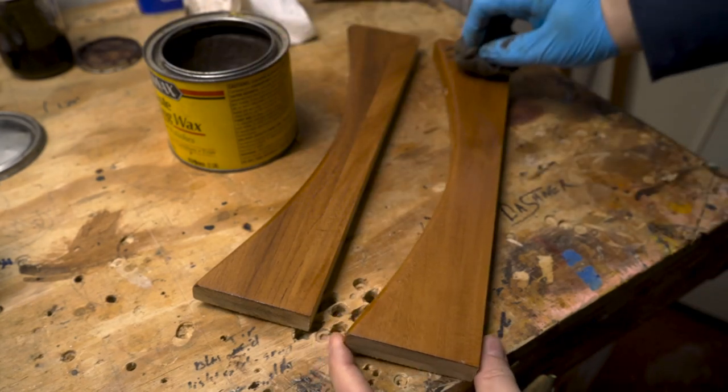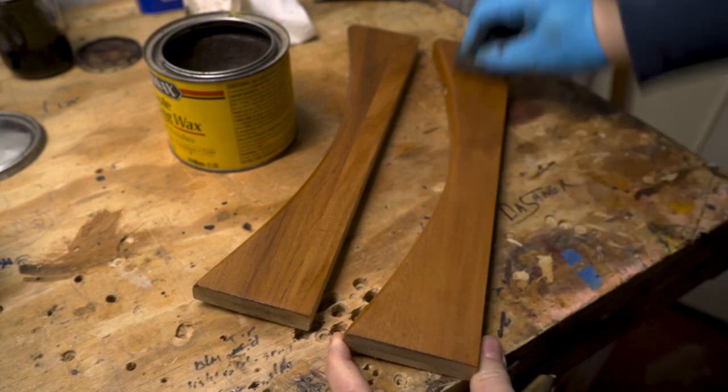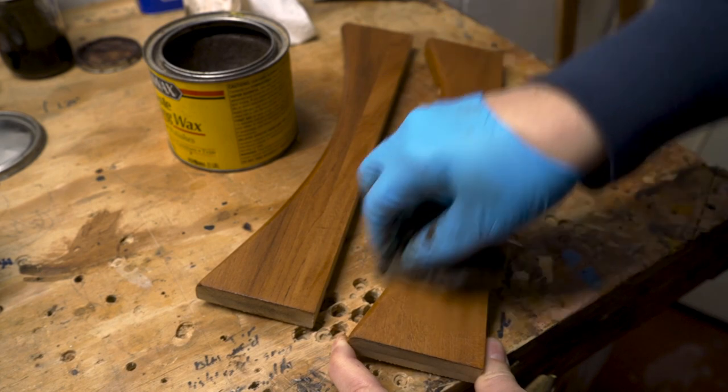Once the polyurethane was completely dry, the finishing touch was to go over it with some fine steel wool and some wax.